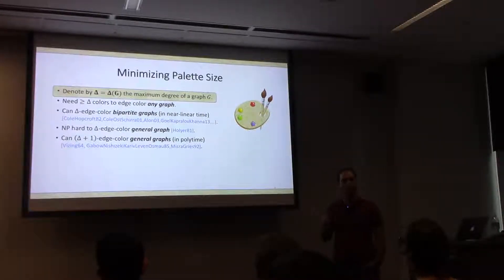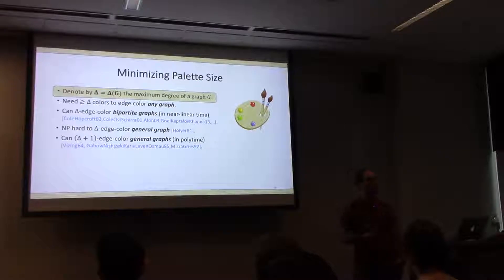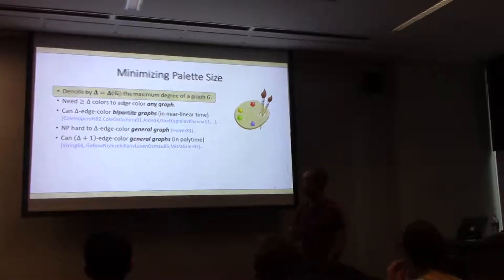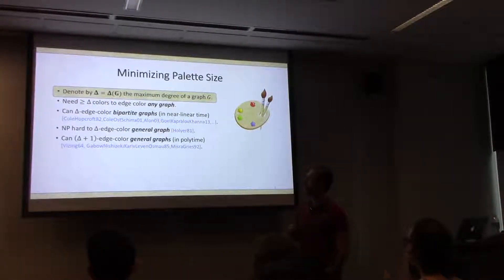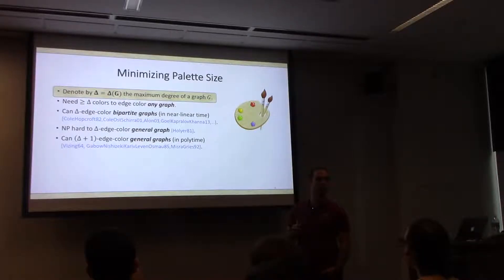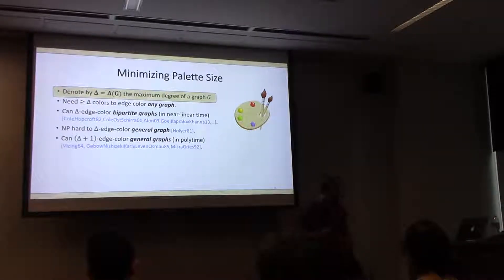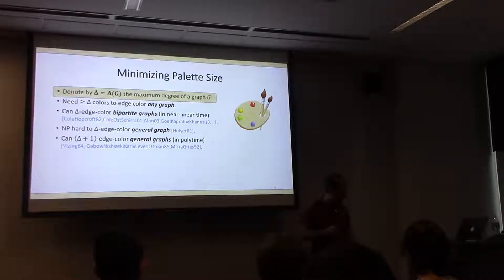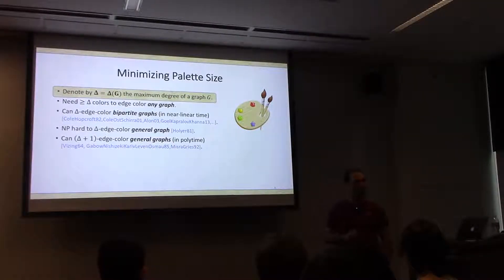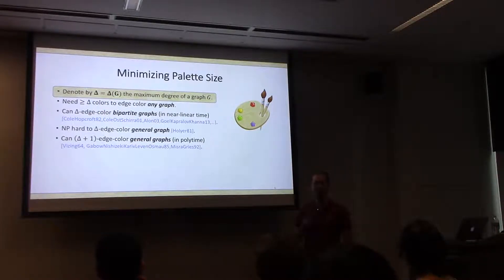Let me take a quick detour. Is it NP-hard even if you're promised there exists a delta coloring? I don't know about the promise problem, but it's definitely NP-hard to decide.